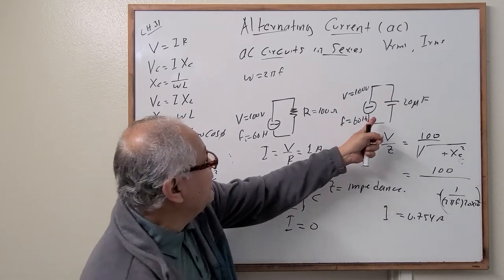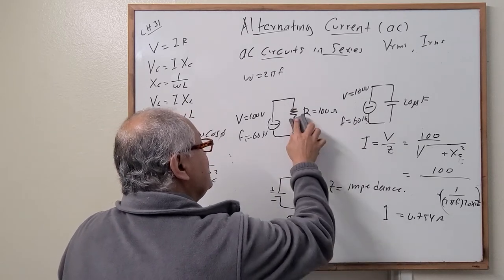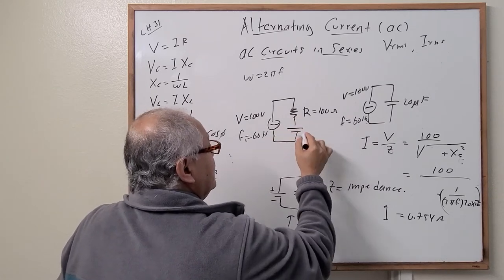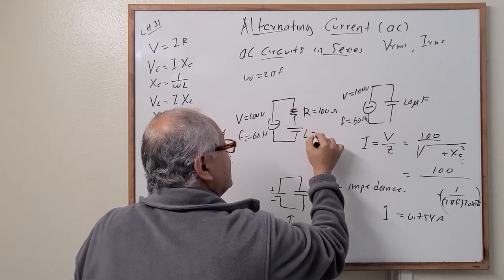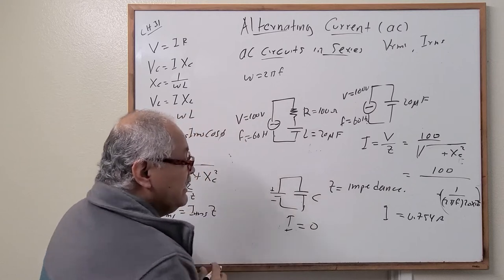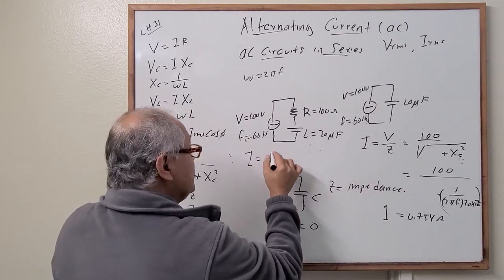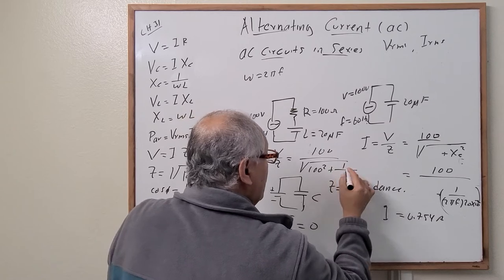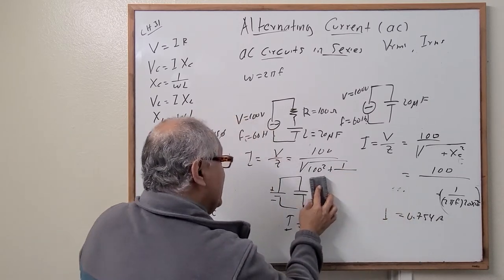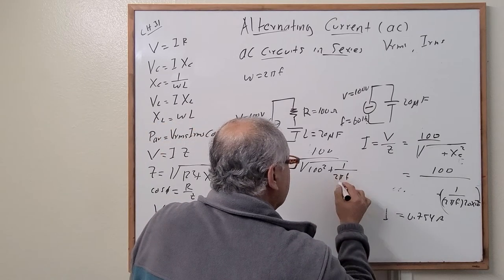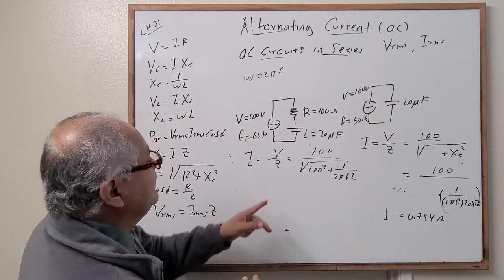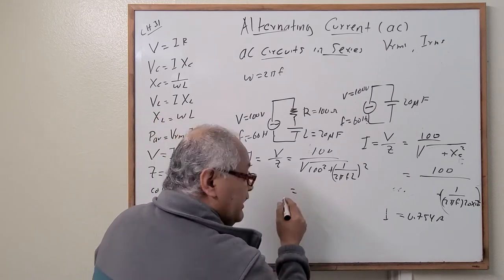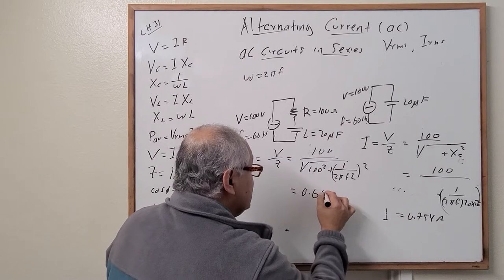Now let's combine the capacitor and the resistor and find the current. Using the same circuit, we add the capacitor with capacitance 20 microfarads. We use the equation: current equals V over Z, which equals 100 over the square root of 100 squared plus (1 over 2 pi times 60 times 20 times 10^-6) squared. When we calculate the values, the current equals 0.642 amps. Notice how the current changes when we combine the individual components.